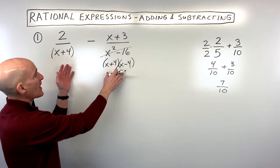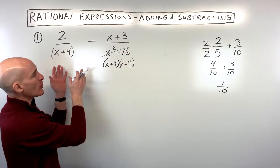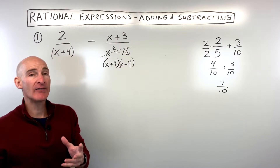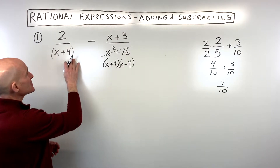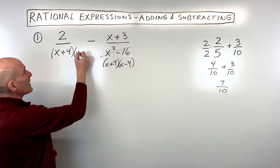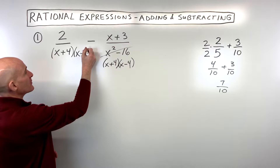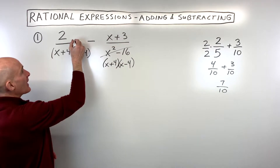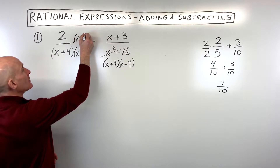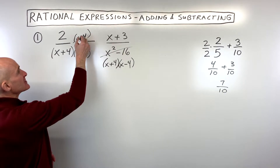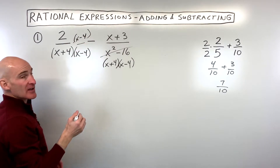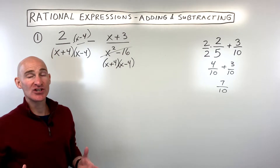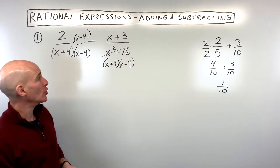Over here we have an x plus 4, but we don't have an x minus 4. So I look at both fractions and I say, what do I have and what do I need, so that they both have that common denominator. In order to make this also have an x minus 4 in the denominator, whatever I multiply the denominator by, I also have to multiply the numerator by, because anything divided by itself is 1, and 1 times this fraction doesn't change the value — it's just going to change the way that it looks.